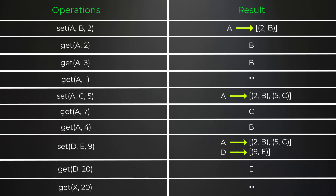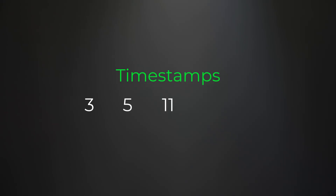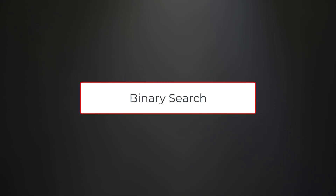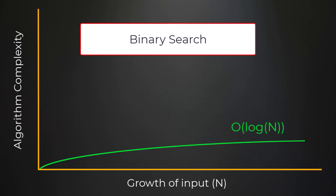Now let's talk about the algorithm. Remember how the timestamps will always be strictly increasing? A strictly increasing input means our input is automatically sorted. Whenever you think of sorted input, the first thing you should think of is binary search. Binary search gives us logarithmic time complexity, which is super efficient — keep that in mind.